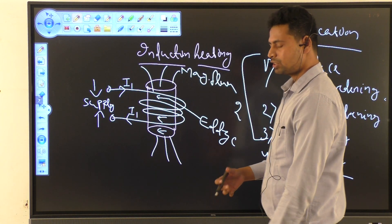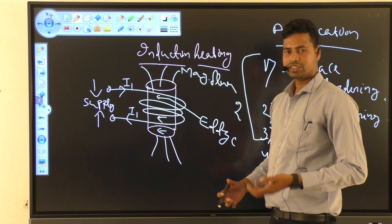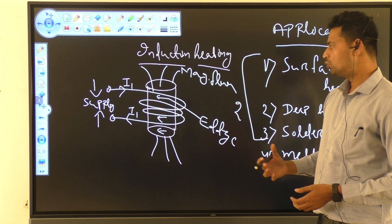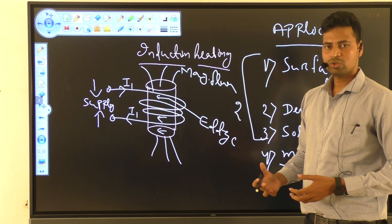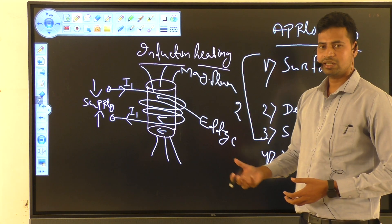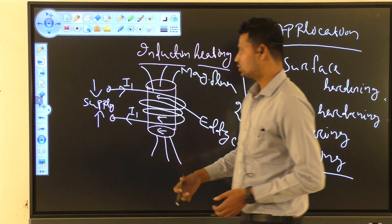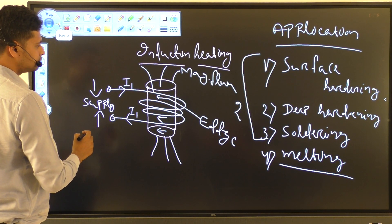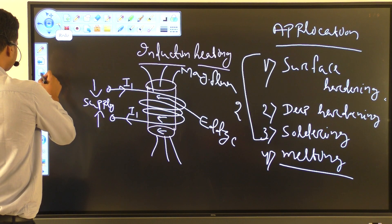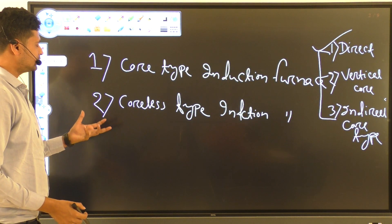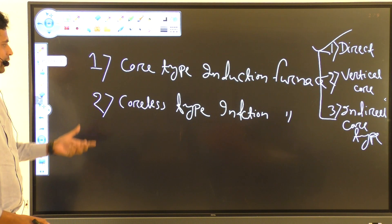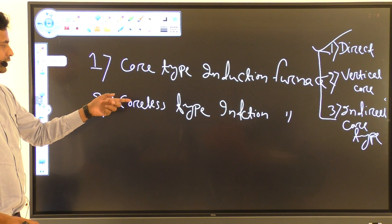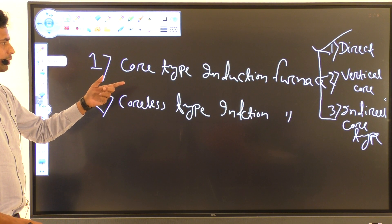So how does the melting process occur in industries using induction? Basically we use induction furnaces. There are two types of induction furnaces: one is the core type induction furnace and the second is the coreless type induction furnace.